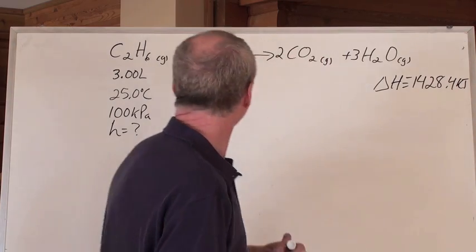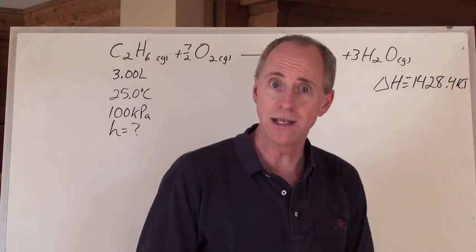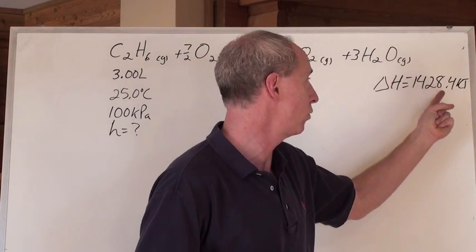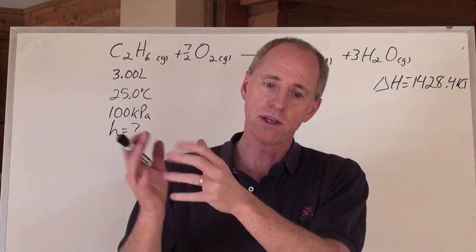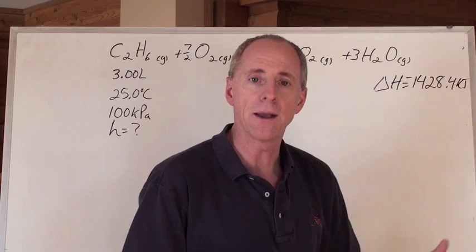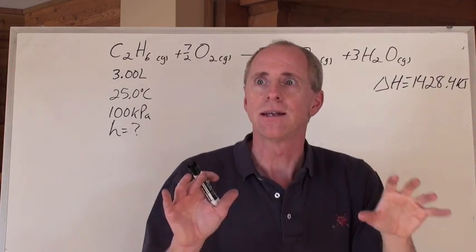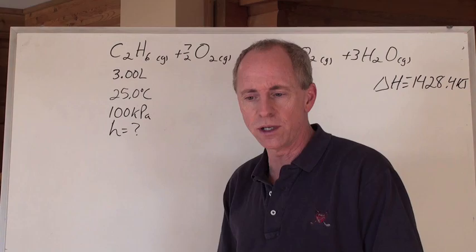Well, if you weren't given what the delta H for this equation is, and by the way, it is negative 1428.4, we previously calculated that, you would go sum of the heats of formation of products minus reactants in order to calculate that quantity. Now, you've got that, and then you're saying, yeah, but how much energy is released for 3 liters undergoing combustion?